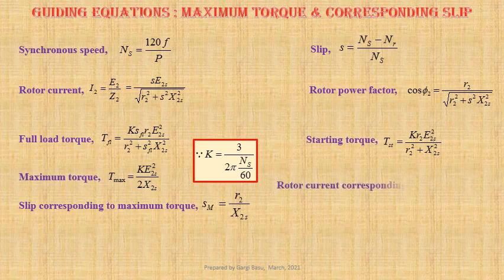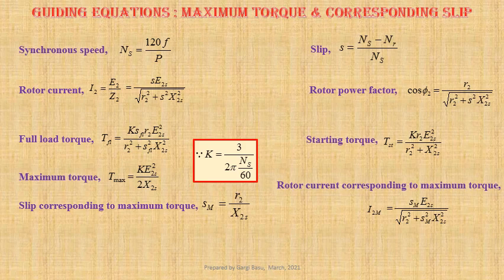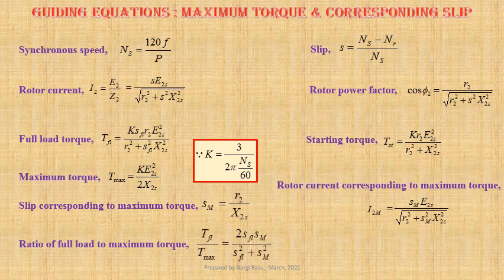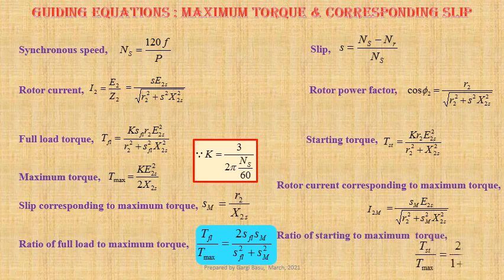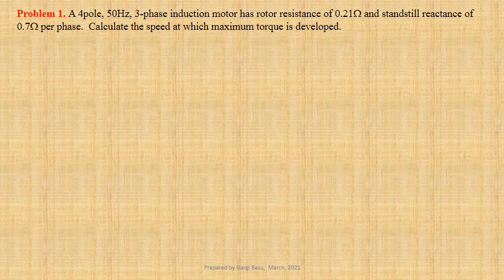Rotor current corresponding to maximum torque I2M equals to SM times E2S divided by root over R2 squared plus SM squared X2S squared. Expression for ratio of full load torque to maximum torque TFL is to Tmax equals to 2 SFL SM divided by SFL squared plus SM squared. Ratio of starting torque to maximum torque TST is to Tmax equals to 2 SM divided by 1 plus SM squared.